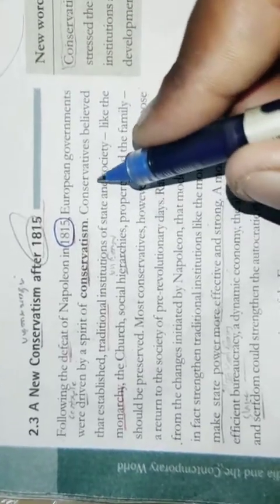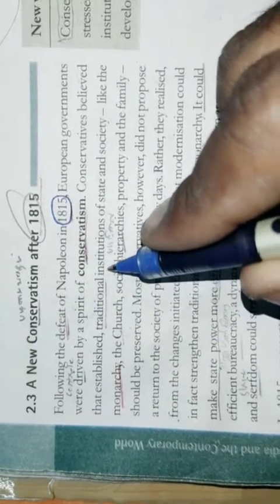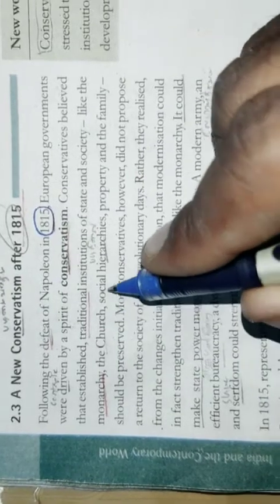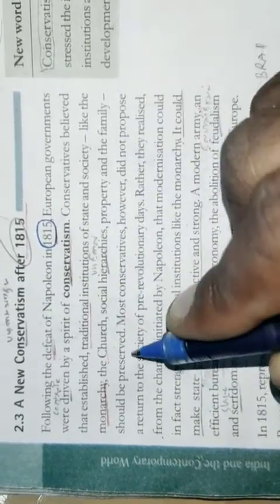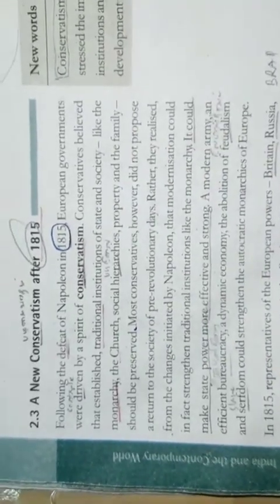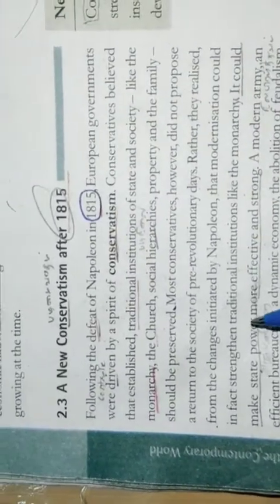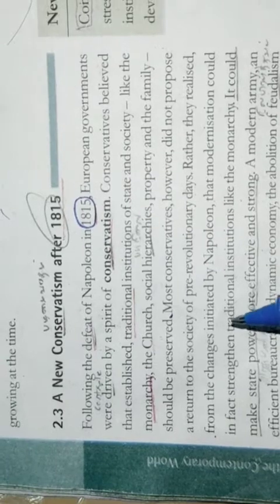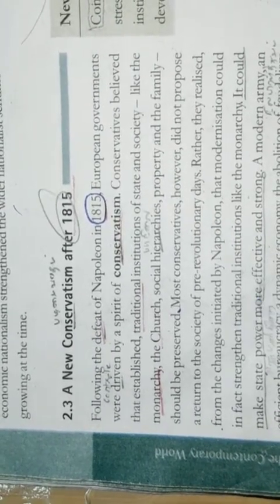The main intention was to restore the monarchies that had been overthrown by Napoleon and create a new conservative order in Europe. The conservative regimes set up in 1815 were autocratic. They did not tolerate criticism or dissent and sought to curb activities that questioned the legitimacy of autocratic government. Most of them imposed censorship laws to control newspapers, books, plays, and songs that reflected ideas of liberty and freedom.